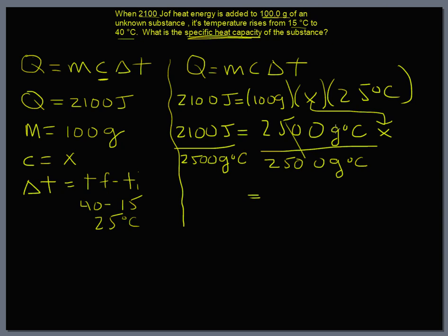And this cancels our grams. Everything here cancels. There is our X. And when we look at our unit, we'll get the unit down here first: joules, grams, degrees Celsius. And look, that's what we want because that's the way our specific heat capacity is expressed. That's the way the constants are given.